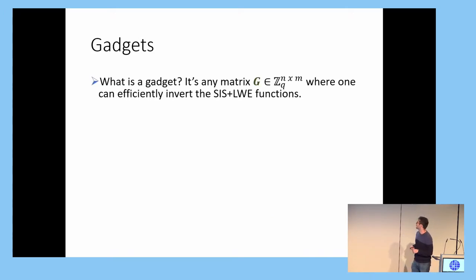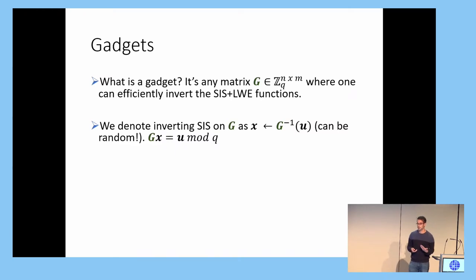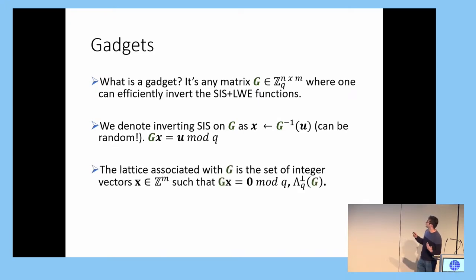So, as I mentioned, a gadget is any matrix such that we can efficiently invert the SIS and LWE functions. We'll mostly be focused on the SIS function. And our notation here is going to be that X is going to be sampled from G inverse of U, where U is a vector in ZQ of the N. It's important to note here that G inverse is not a matrix, it's a function. And oftentimes, it's randomized. So we'll be sampling a distribution over the solution set. And we call the SIS lattice associated to the gadget the G lattice.